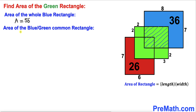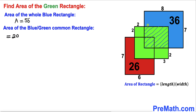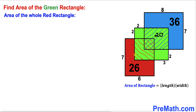The area between the blue and green common rectangle is going to be the total area 56 minus 36, which equals 20 square units. So this common region is 20 square units.